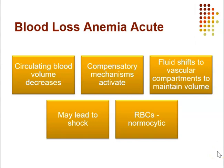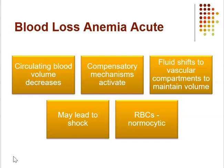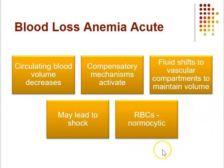Acute blood loss is sudden blood loss — for example, esophageal varices. You're losing circulating blood volume, and compensatory mechanisms occur: heart rate increases and peripheral vessels constrict to help maintain blood volume. With acute loss, circulating red blood cells are normal shape and size — normocytic — with no abnormalities, because the body is simply losing them suddenly. Eventually, fluid shifts to the vascular compartment to help maintain volume, which is when you'll see a change in labs, and this may lead to shock.